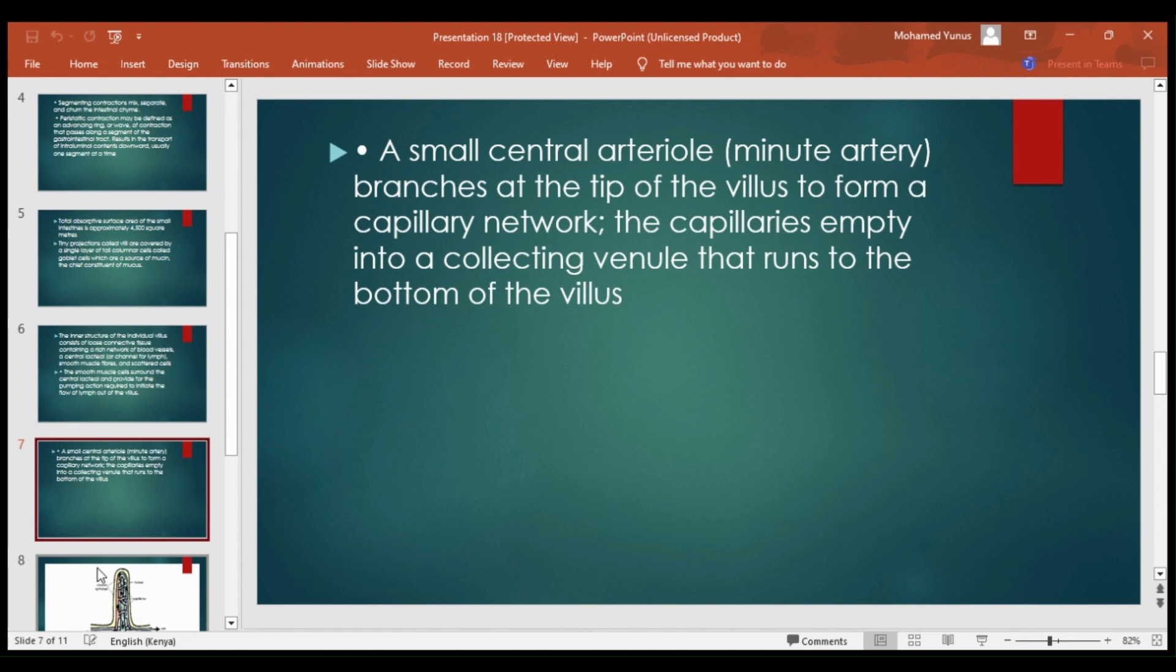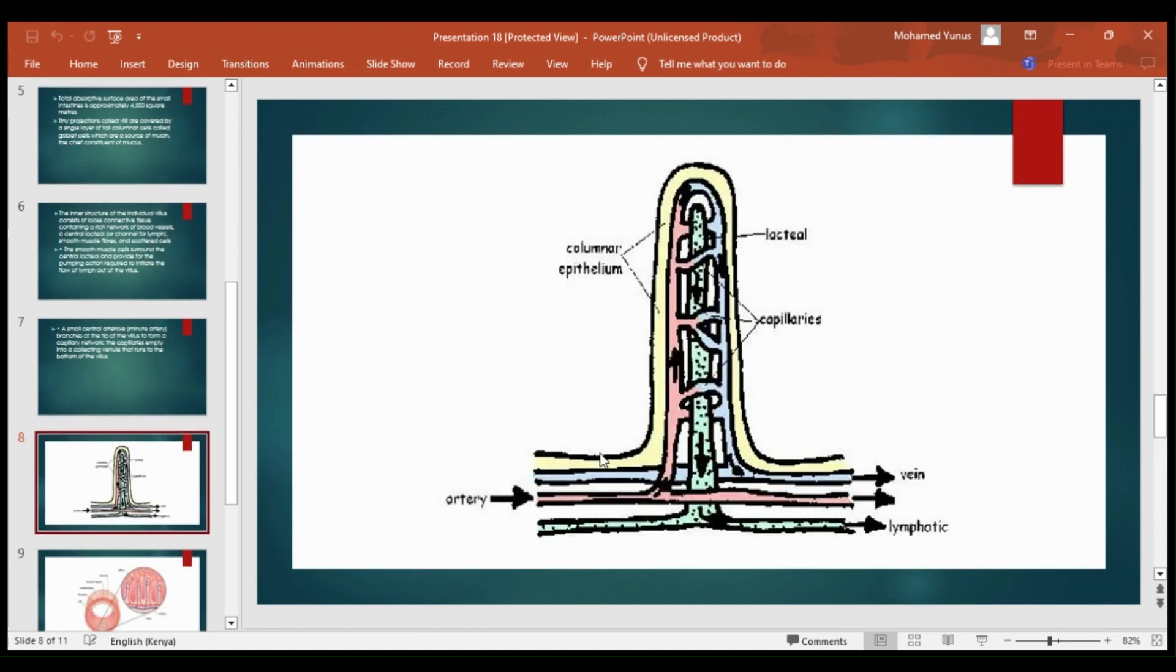Here is the villus diagram. The artery brings oxygenated blood in, which divides into small capillaries. After the oxygen in the blood has been used, the deoxygenated blood comes out through the veins as shown in the diagram.